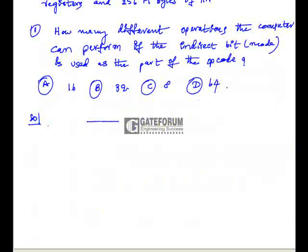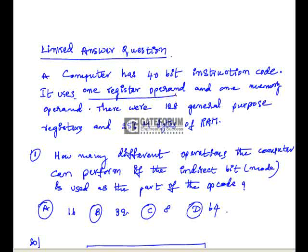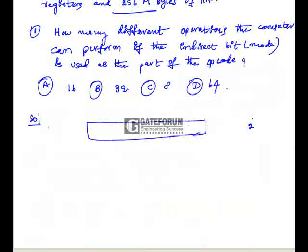The instruction size is 40-bit. It uses one register operand and one memory operand. There are 128 general purpose registers and 256 megabytes of RAM. 256 means it is 2^8 into 2^20. One mega is 2^20, so 2^28.